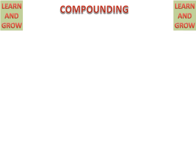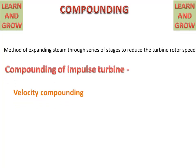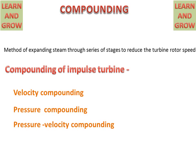Today we will discuss about compounding of impulse turbines. The method of expanding steam through a series of stages to reduce the turbine rotor speed is called compounding. In the case of impulse turbines, compounding is of three types: velocity compounding, pressure compounding, and pressure-velocity compounding.